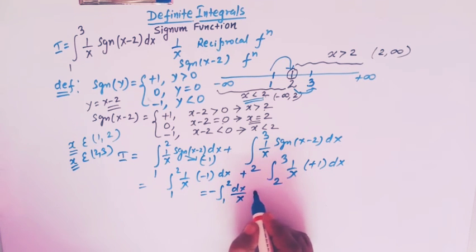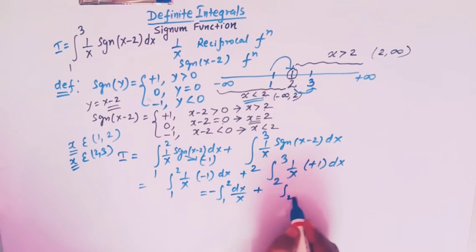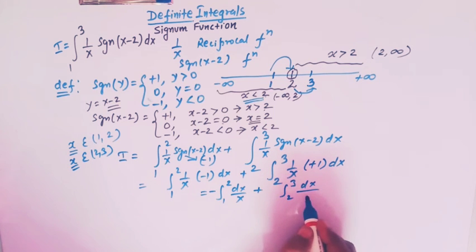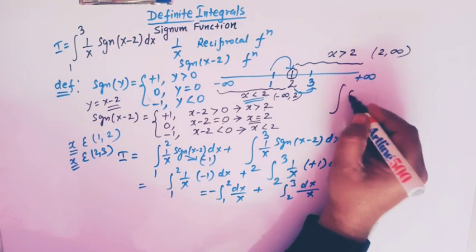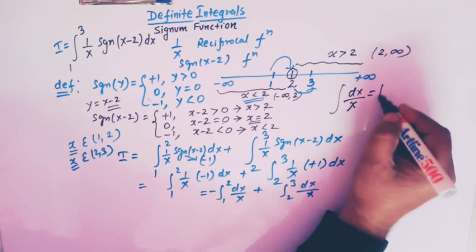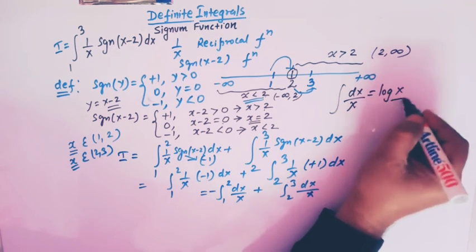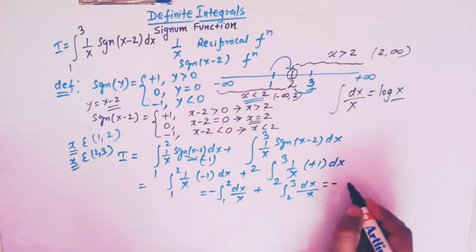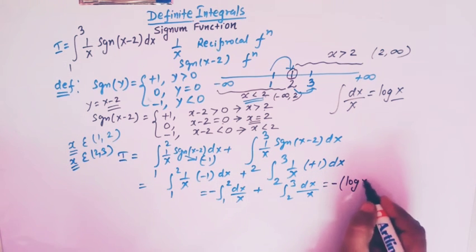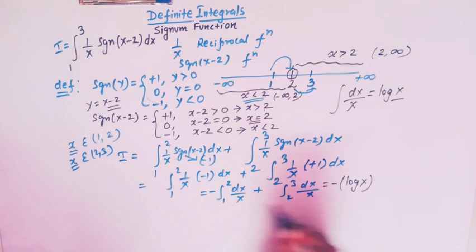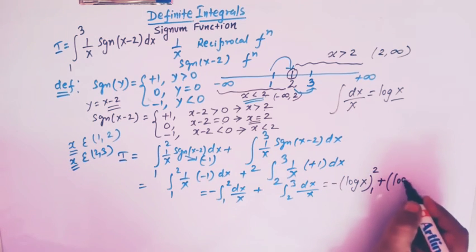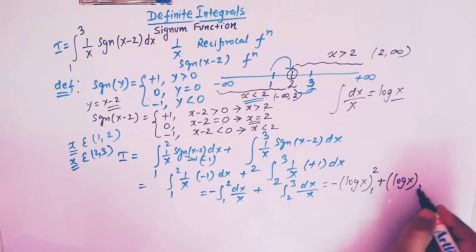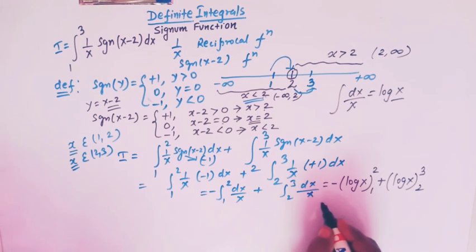Now we have two simple integrals, because the integral of 1 over x is log x. So this becomes minus log x evaluated from 1 to 2, plus log x evaluated from 2 to 3.